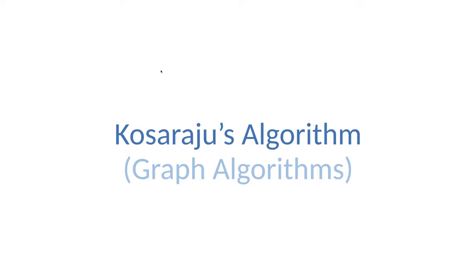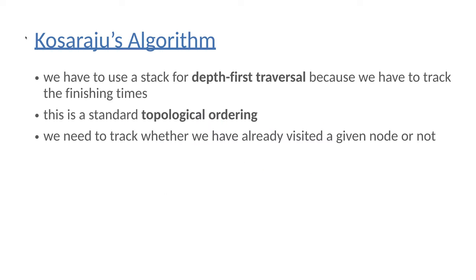In the coming lectures we are going to talk about our first strongly connected components related approach, the so-called Kosaraju's algorithm. Kosaraju's algorithm is able to find the strongly connected components in a directed graph — where we have directed edges. As discussed in a previous lecture, we have to use a stack for a depth-first traversal, because we are going to do two depth-first searches.